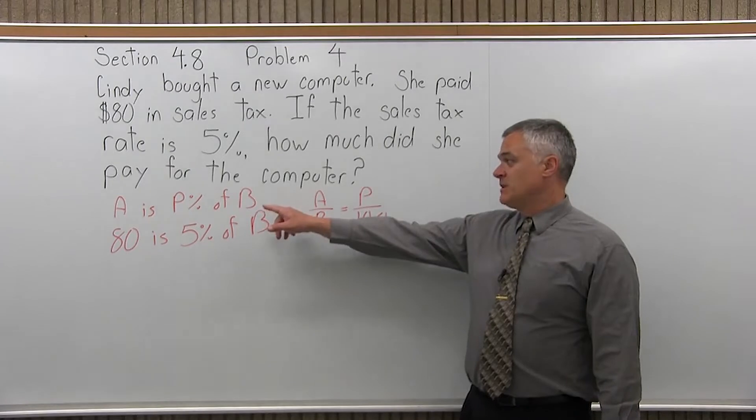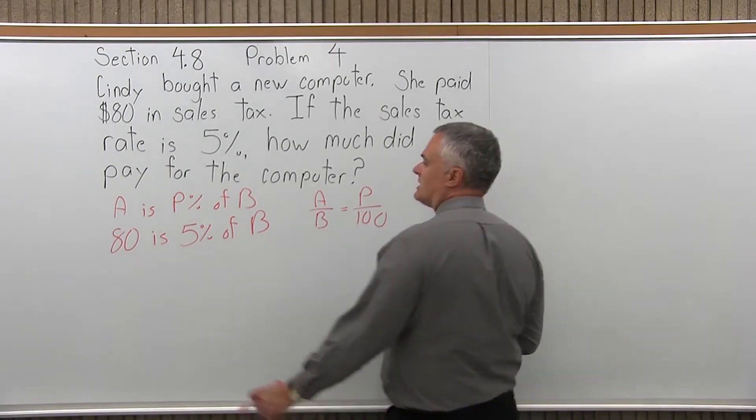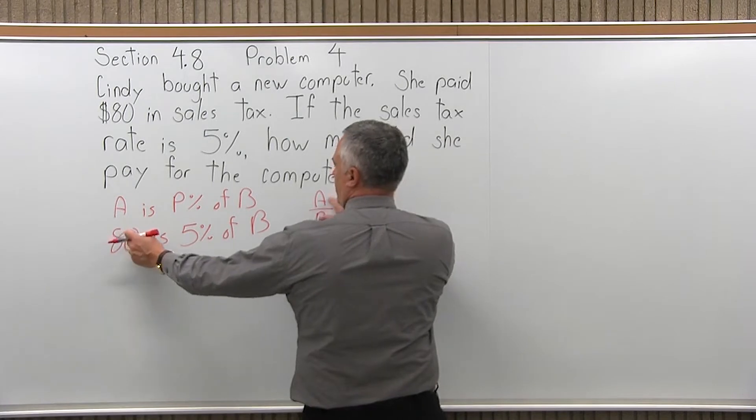So I do have A as P percent of B. I have 80 as 5% of B. So as I start filling in the formula that I like...